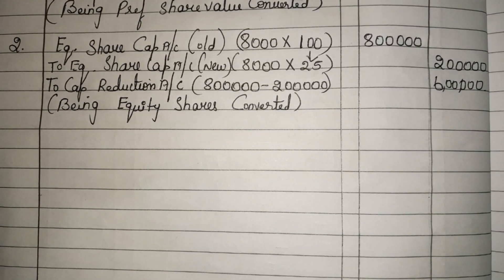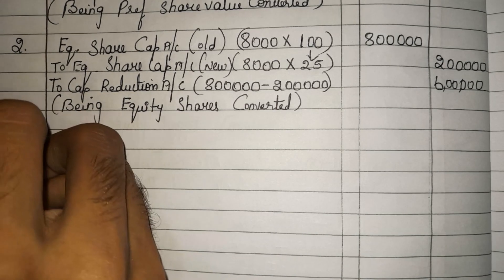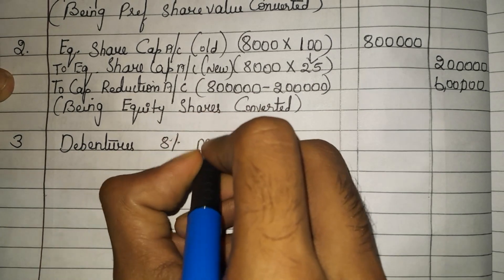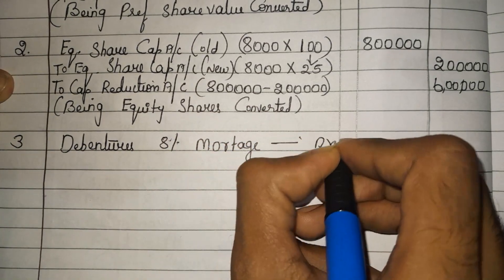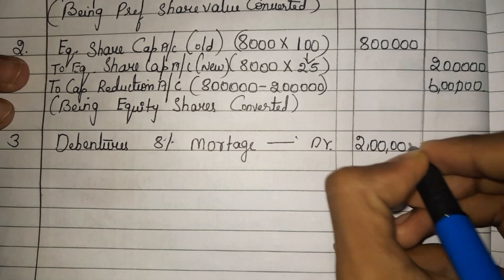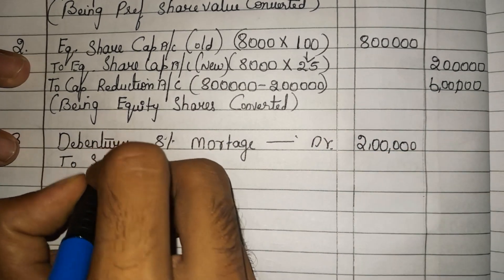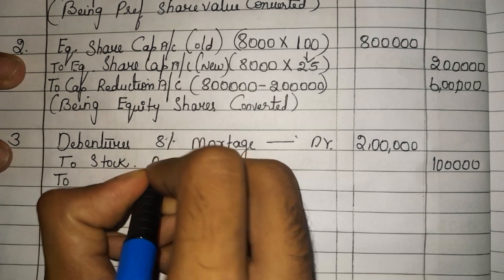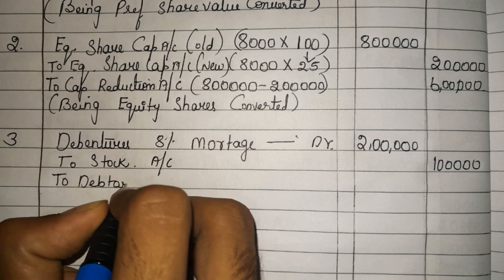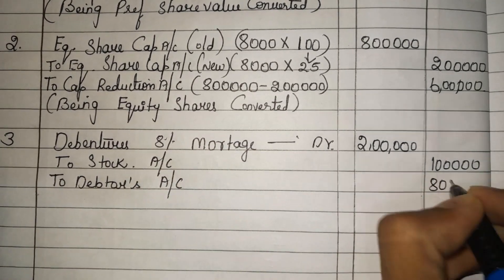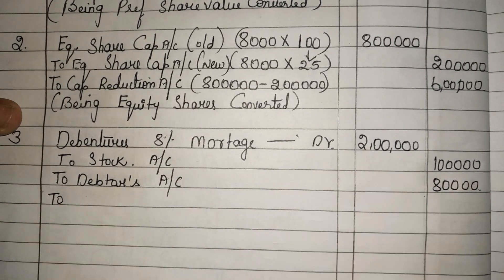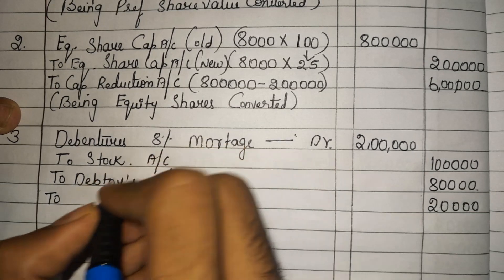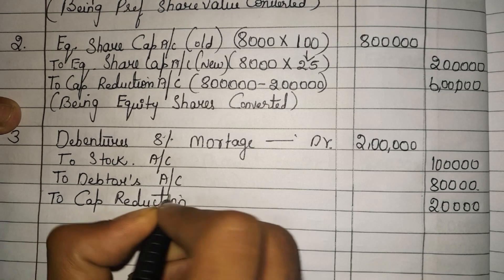Next, debenture holders are to take over stock and debtors in full settlement. The 8% mortgage debentures have a value of 2 lakh. They are taking stock worth 1 lakh and debtors worth 80,000. From 2 lakh we subtract 1 lakh and 80,000 — the remaining 20,000 is the sacrifice made by mortgage debenture holders. This 20,000 is transferred to capital reduction account. The narration will be: being debentures settled.